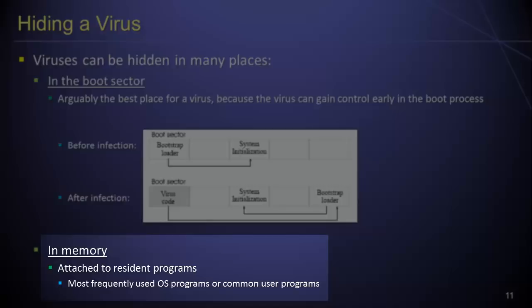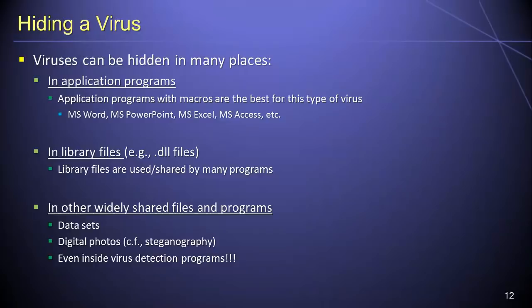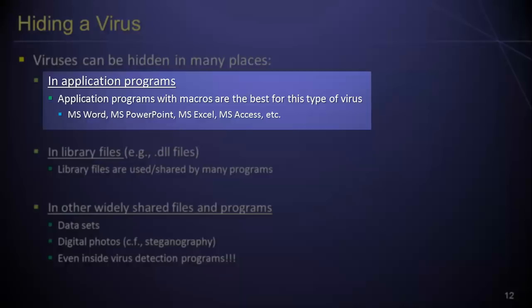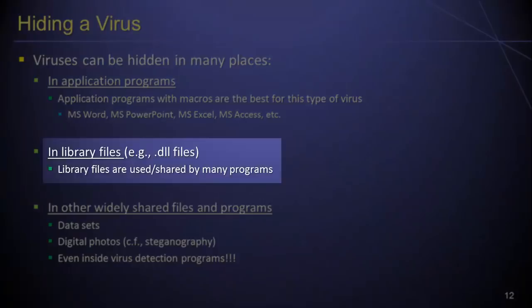In addition to hiding viruses in the boot sector or in system memory, viruses can also be hidden in application programs. Certain applications that allow users to write and execute macros have proven to be common targets for viruses, since clever virus developers have been able to exploit security flaws in those applications to propagate and run malicious code. Library files, such as DLL files, are also a common target because they are used by or shared by many different programs — when any program that relies on an infected library file is activated, the virus will also become active, allowing it to rapidly propagate.